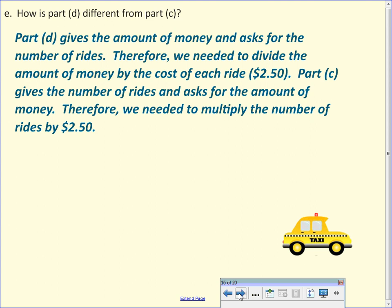So again, the difference was part D gave us the money. We had to find how many rides. We had to find R. In part C, they told us what R was. They told us the number of rides, and we had to find the amount of money. Because multiplication and division are inverse operations. So one time we had to divide, one time we had to multiply. And those help us with our expressions.